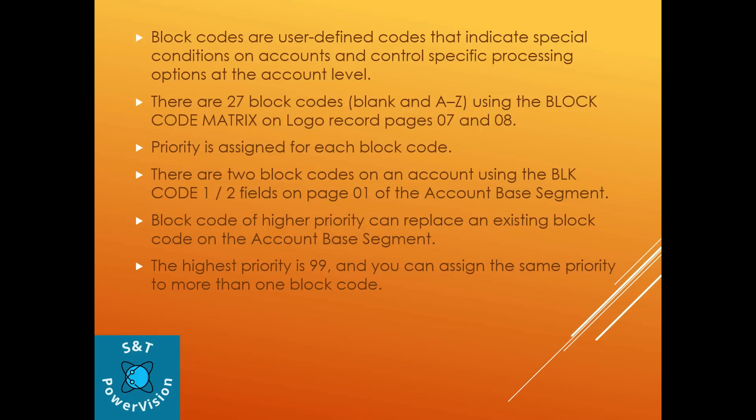As I said, total there are 27 block codes, A to Z, and using the block code matrix on logo ARML screen 0708, priority is assigned for each block code. If you go to the account level screen, there are two block codes: block code 1 and block code 2 on page 01. A block code of higher priority can replace an existing block code — the higher priority block code replaces the lower priority block code at the account level screen.